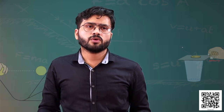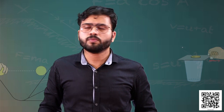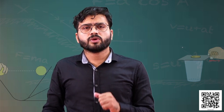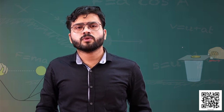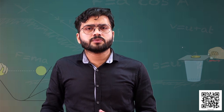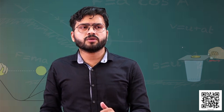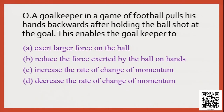This is how the first and second law of motion are connected. Let's solve a question: A goalkeeper in a game of football pulls his hands backward after holding the ball shot at the goal. This enables the goalkeeper to: (1) exert a large force on the ball, (2) reduce the force exerted by the ball on the hand, (3) increase the rate of change of momentum, or (4) decrease the rate of change of momentum.